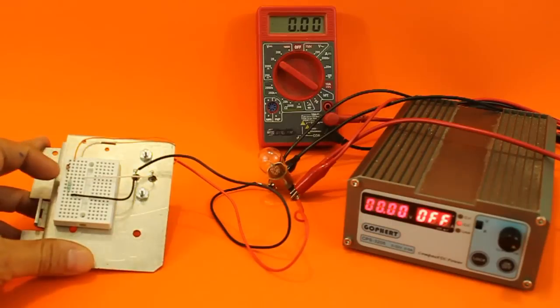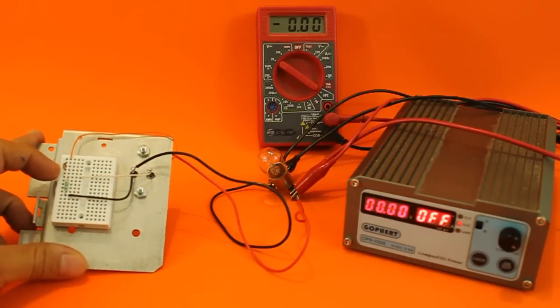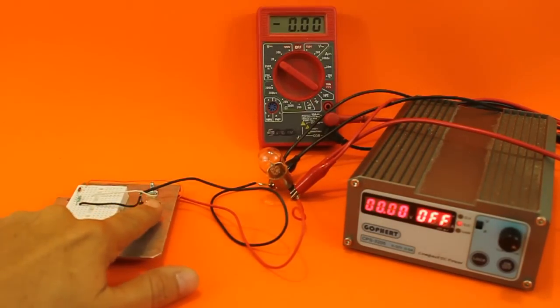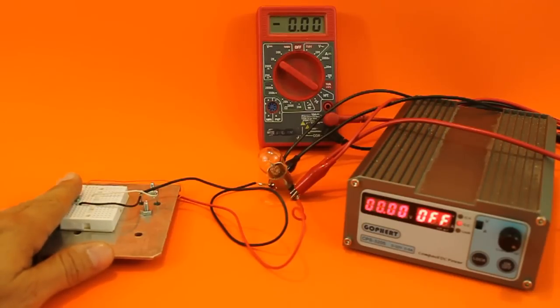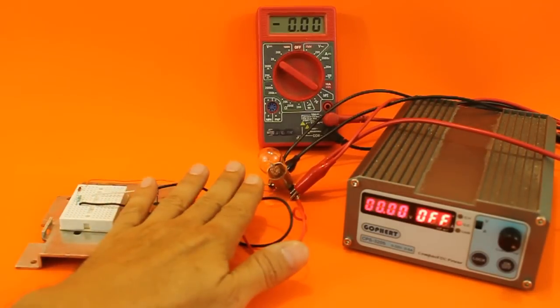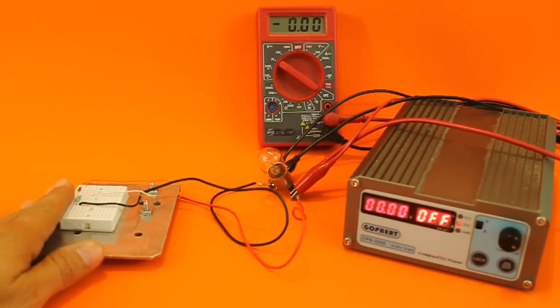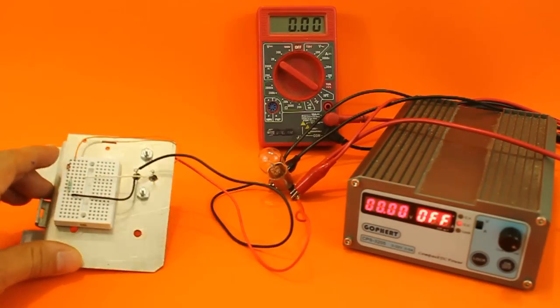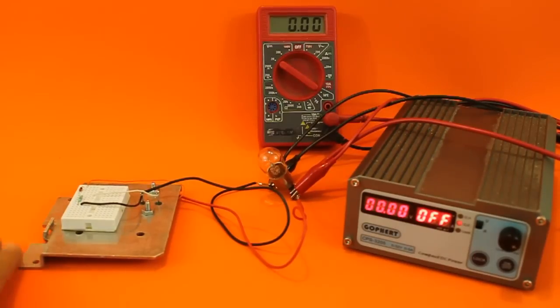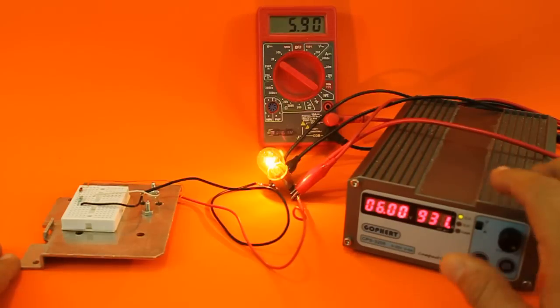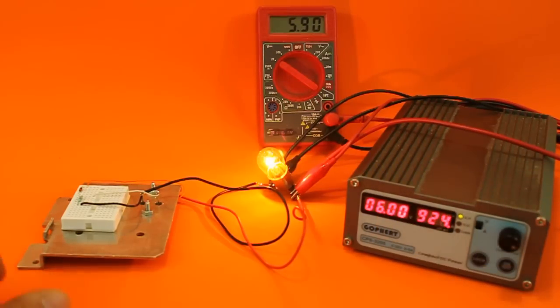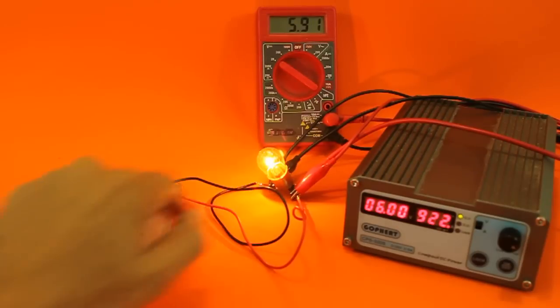The Zener is a 9.1-volt Zener, plus 0.7 volts from the transistor gives 9.8 volts. This is the maximum voltage that will reach the lamp. Of course, it can vary a little because of the tolerance of the Zener diode. So let's see. I am going to turn on the power supply. It is at 6 volts, and this is the voltage reaching the lamp.